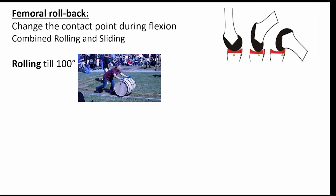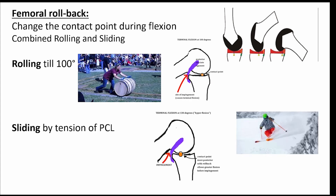If rolling were the only motion, impingement would occur posteriorly with premature termination of flexion at only 100 degrees. But with more flexion, PCL tension occurs, leading to dragging of the femoral condyle over the tibial condyle, changing the contact points and allowing for more flexion up to 130 degrees without impingement.